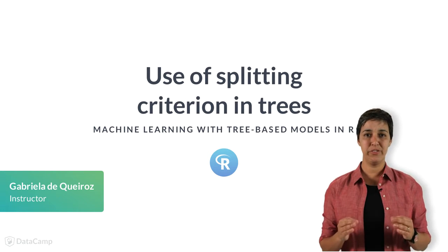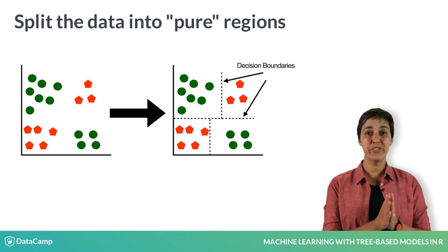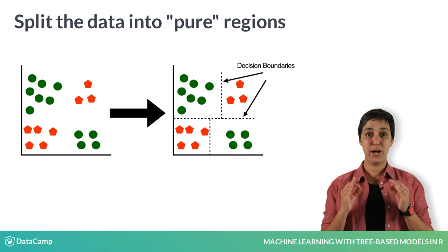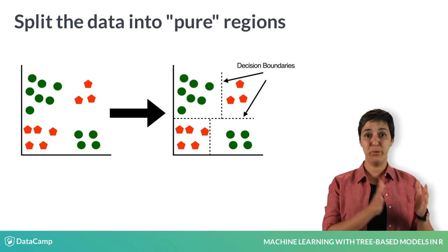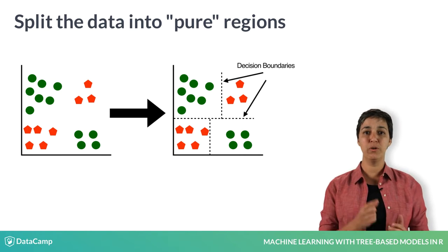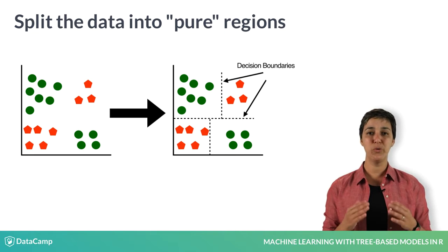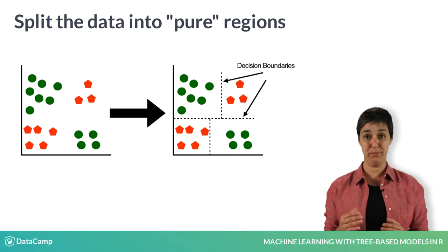The idea behind classification trees is to split the data into subsets where each subset belongs to only one class. This is accomplished by dividing the input space into pure regions — that is, regions with samples from only one class. With real data, completely pure regions may not be possible, so the decision tree will do the best it can to create regions that are as pure as possible.